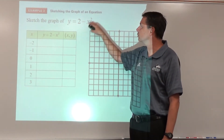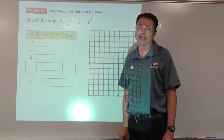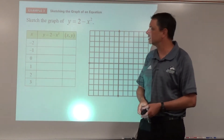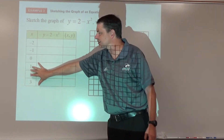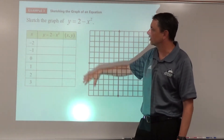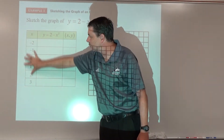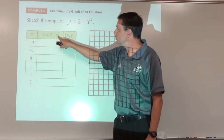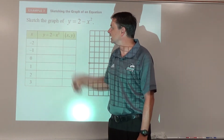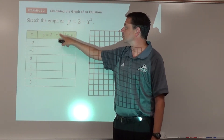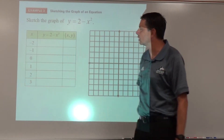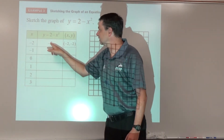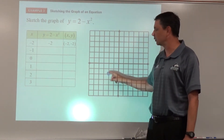For y = 2 - x², y has already been isolated so we're ready to make our table of values. We pick some negatives and some positives. Substituting x = -2: (-2)² = 4, and 2 - 4 = -2. The ordered pair is (-2, -2). We go through the rest the same way — each x and y pair becomes a point to plot.